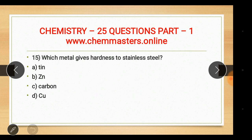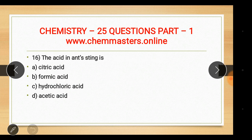Question fifteen: which metal gives hardness to stainless steel? The answer is C — carbon. The other options given were tin, zinc, and copper.